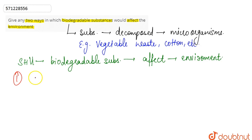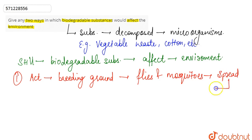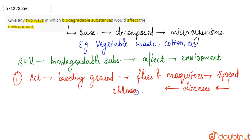One of the ways is that biodegradable waste acts as a breeding ground for flies and mosquitoes, and leads to the spread of diseases such as cholera, malaria, typhoid, etc.